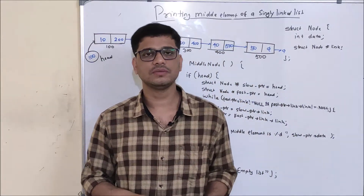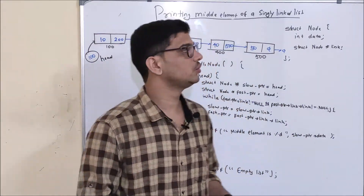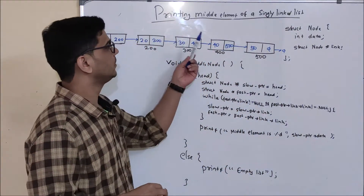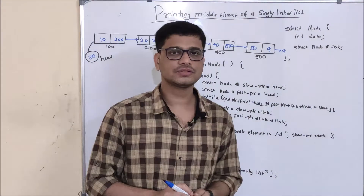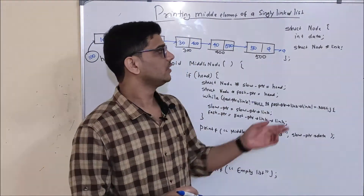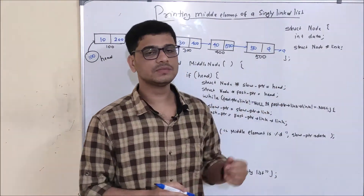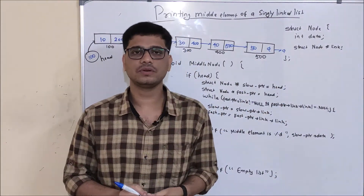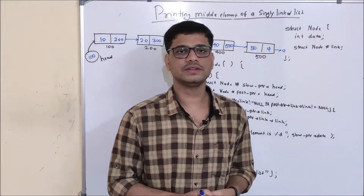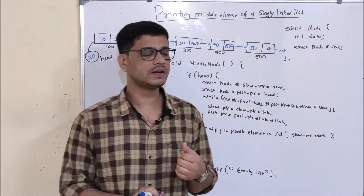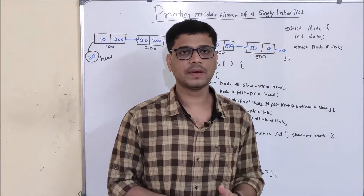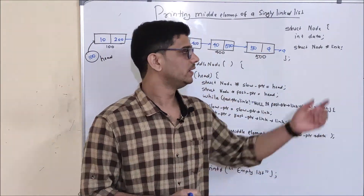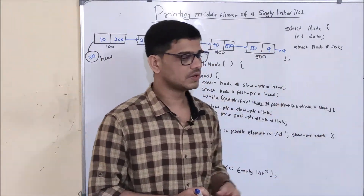Hello friends, in today's video we are going to see how to print the middle element of a singly linked list. First of all, as you can see here, this is my definition of a node of a singly linked list. It has two parts: a data part which is of integer type, and a link pointer.